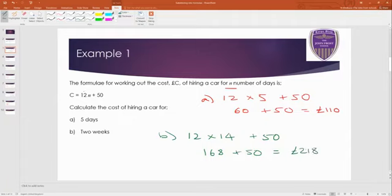Then plus the extra 50 gives us a final answer of 218 pounds. So pretty straightforward. Just be careful on part b especially. n is not 2 because that would mean 2 days. This is 2 weeks, which is 14 days. Just some simple substitution into a formula. And those are our two answers.